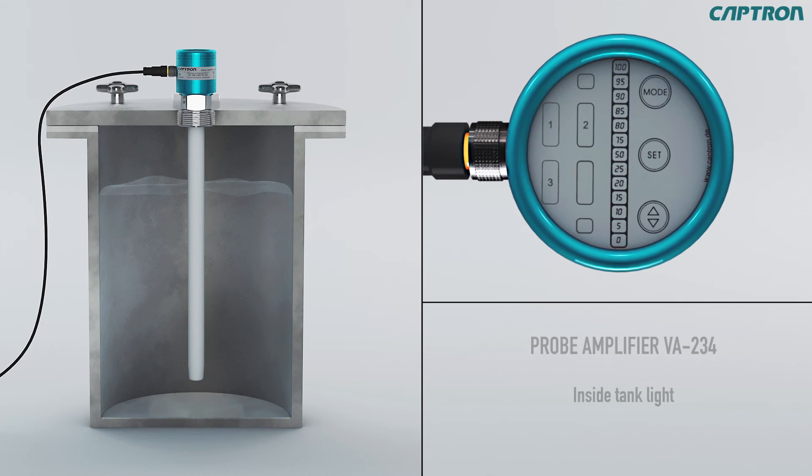Optionally, there is lighting available for the inside of the tank of the probe amplifier VA234. To turn on the LEDs, just touch the set button in measuring mode. The lighting shuts off automatically after 15 seconds to avoid overheating, and can be turned on again after waiting 5 seconds.